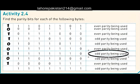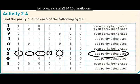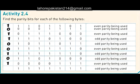In the next part we need to make odd parity. Counting the number of ones: one, two, three, four, five, six — which is even. We need to make it odd, so we will add one to make it seven, which is an odd number.